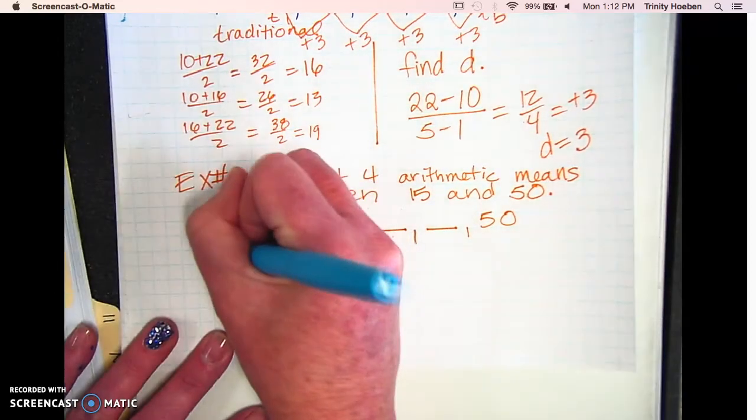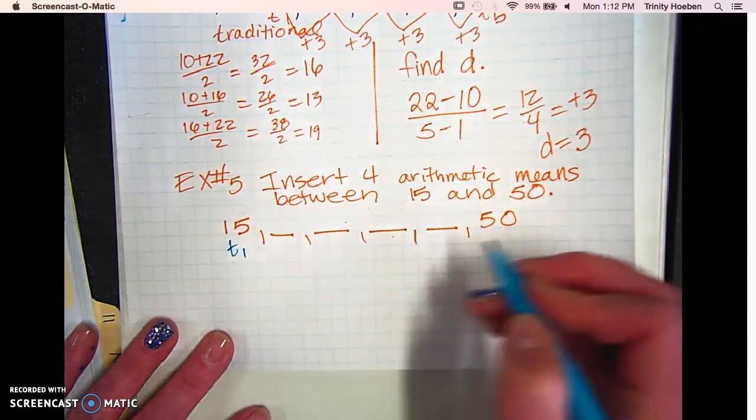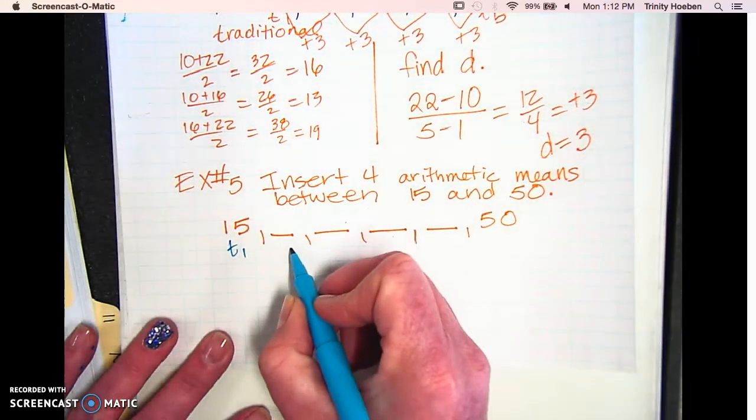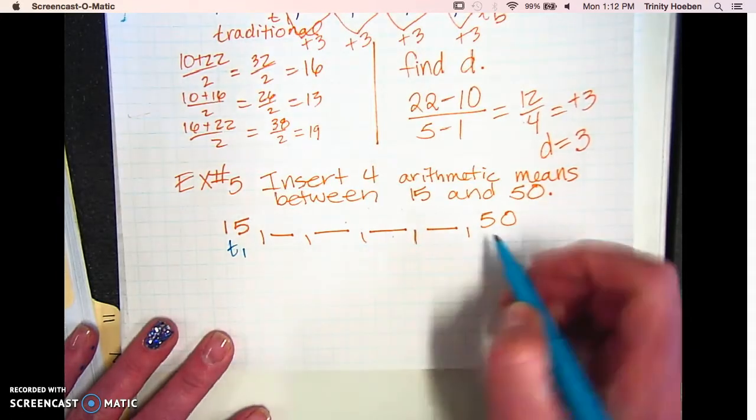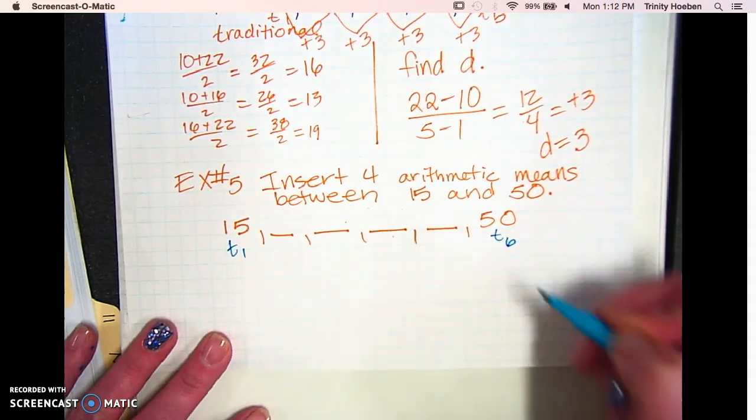Okay, so here's term one. If you want to number them all, term one, term two, term three. But I'm just going to count two, three, four, five, six. That means this is term six.